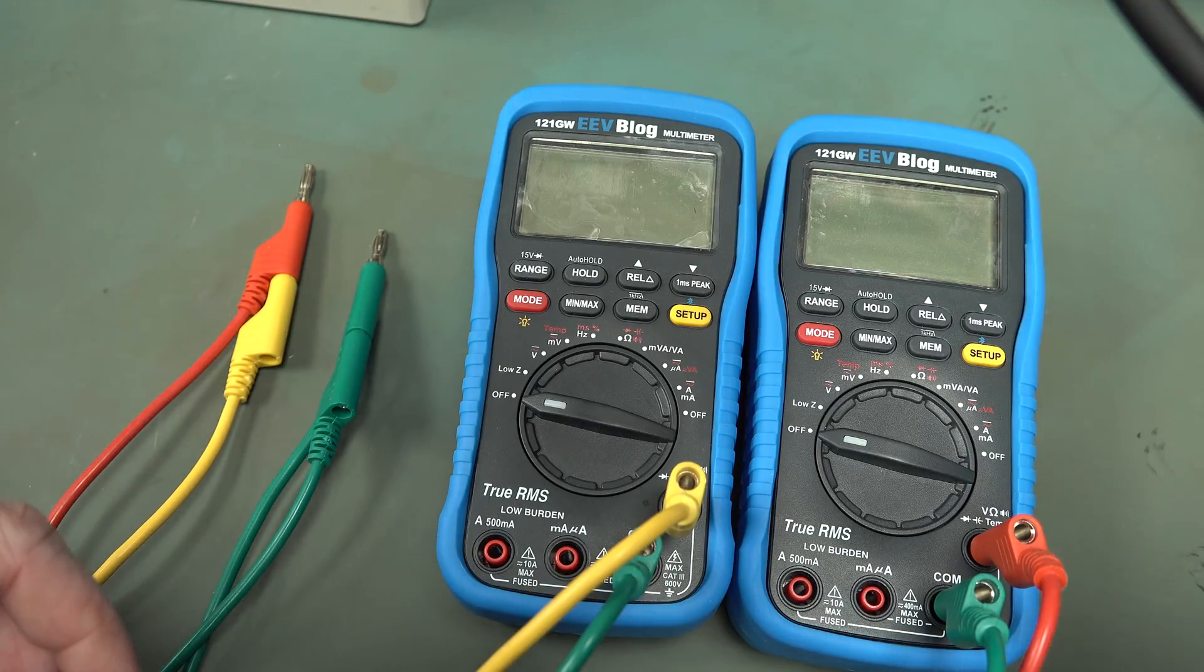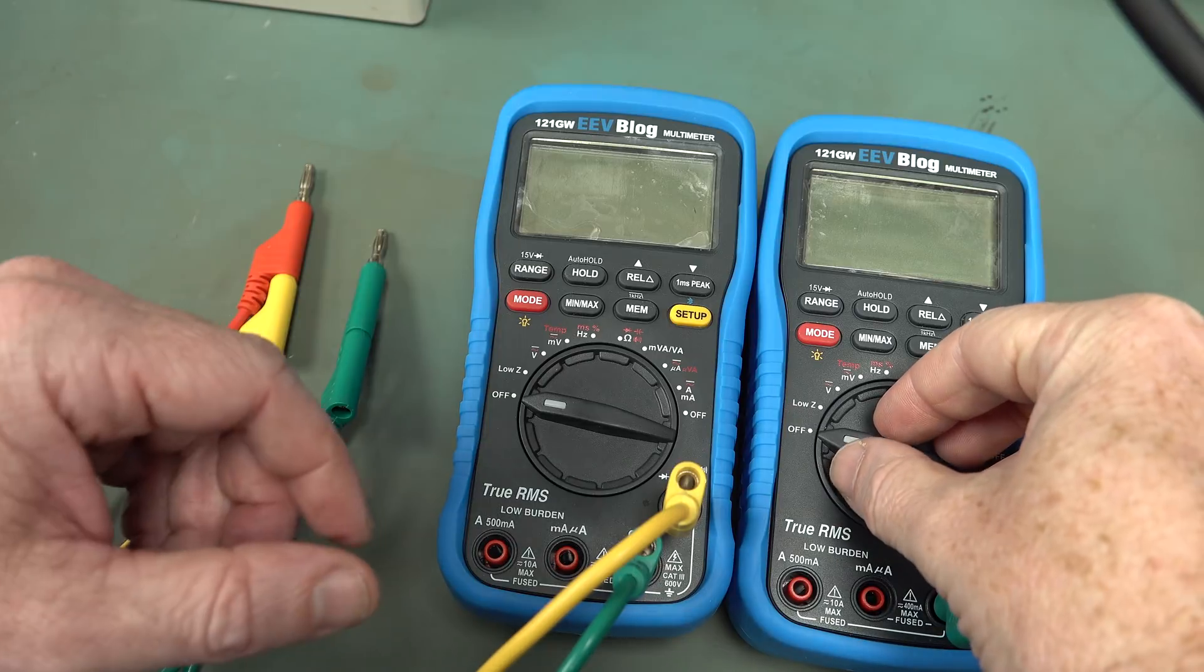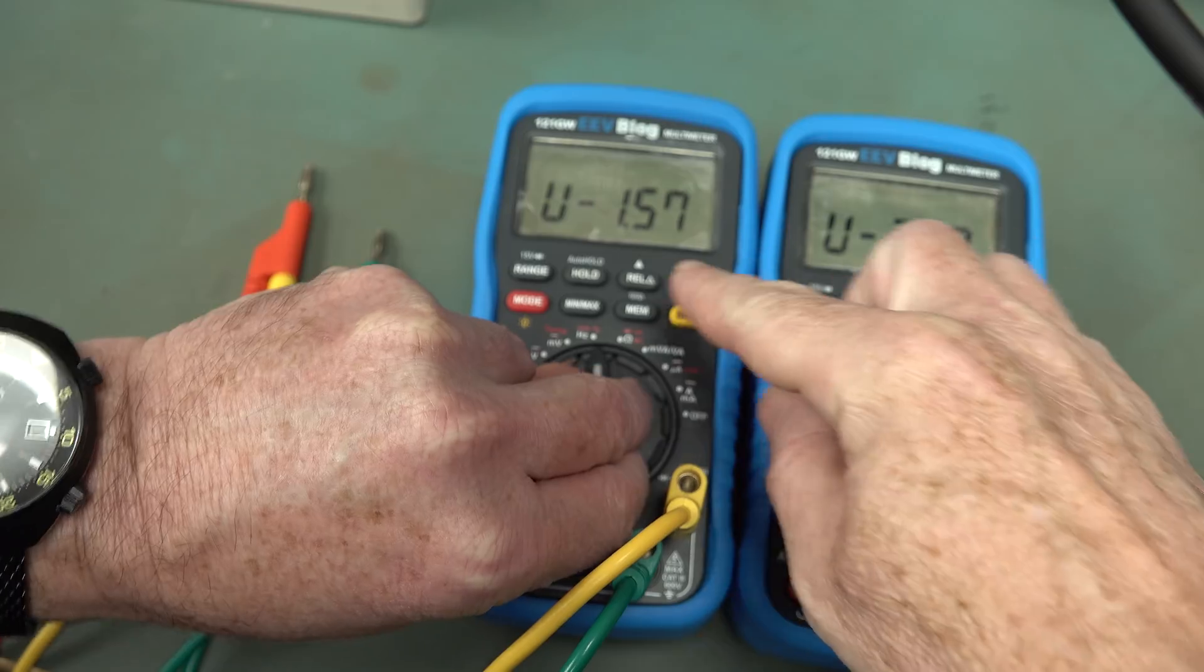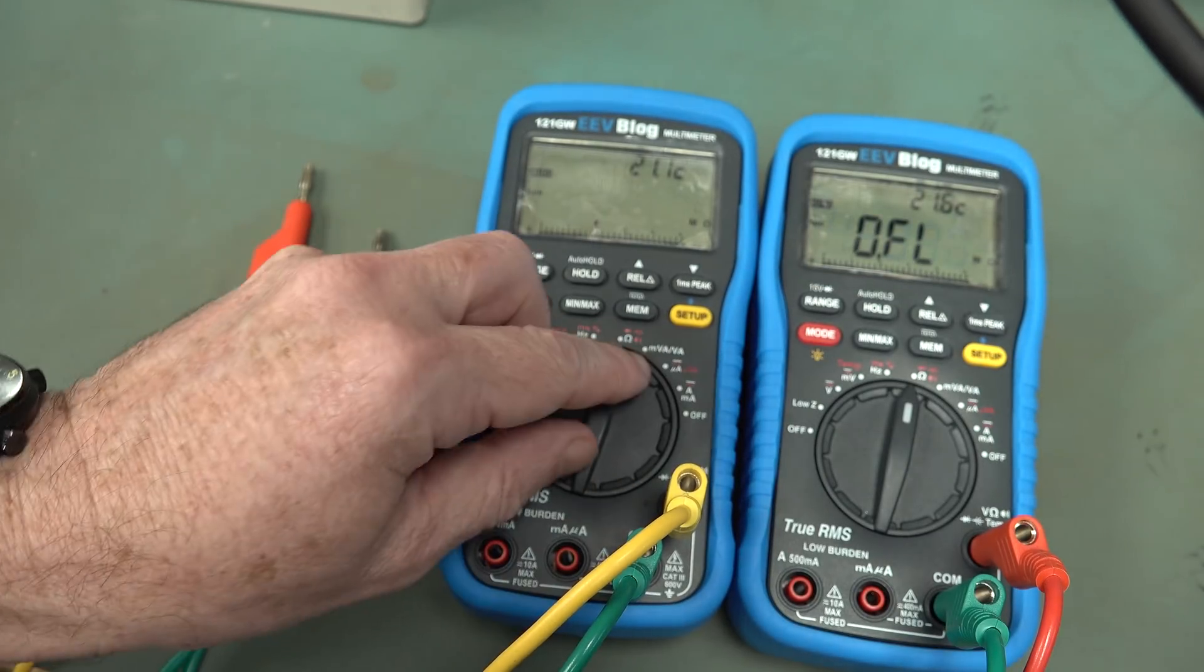Hi, just wanted to demonstrate the difference in the new version 2.00121GW firmware. So I've got two meters, one with 2.00, one with 1.57 here.